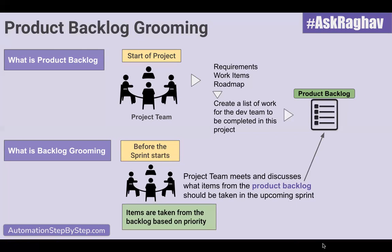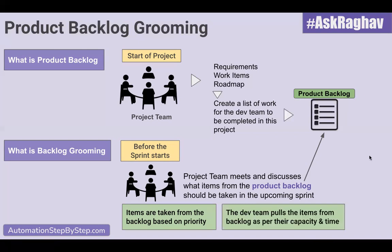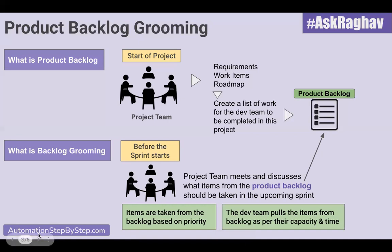Here, we take items from the product backlog and decide these are the items we will be completing in this particular sprint. The items are taken from the backlog based on priority — it can be based on project priority, requirements priority, client priority, user priority, and different factors. And the dev team pulls items from the backlog as per their capacity and time. So whatever items they can take based on priority and cover in this sprint, they take based on their time and capacity. This is what product backlog grooming is.